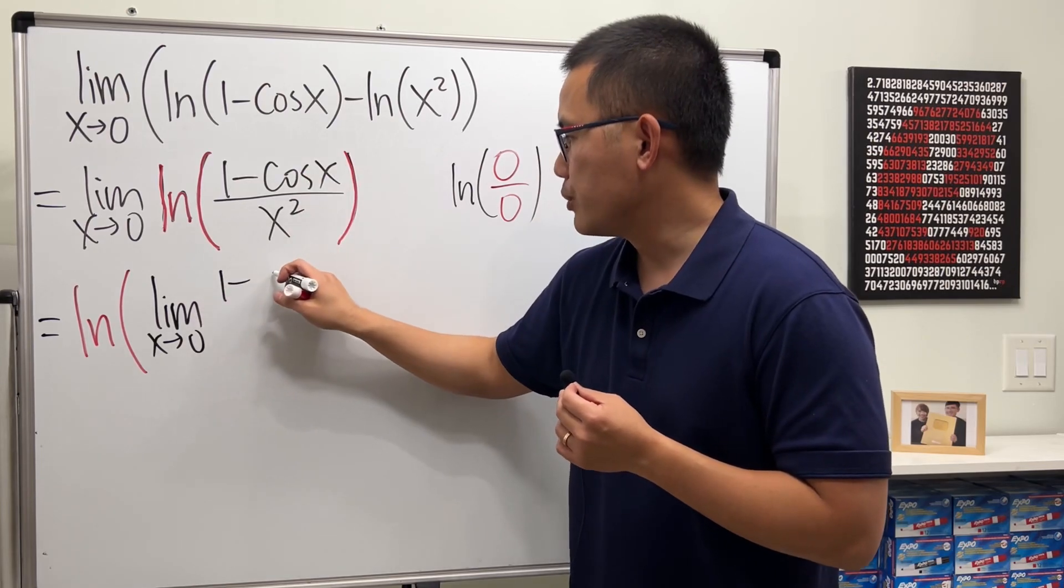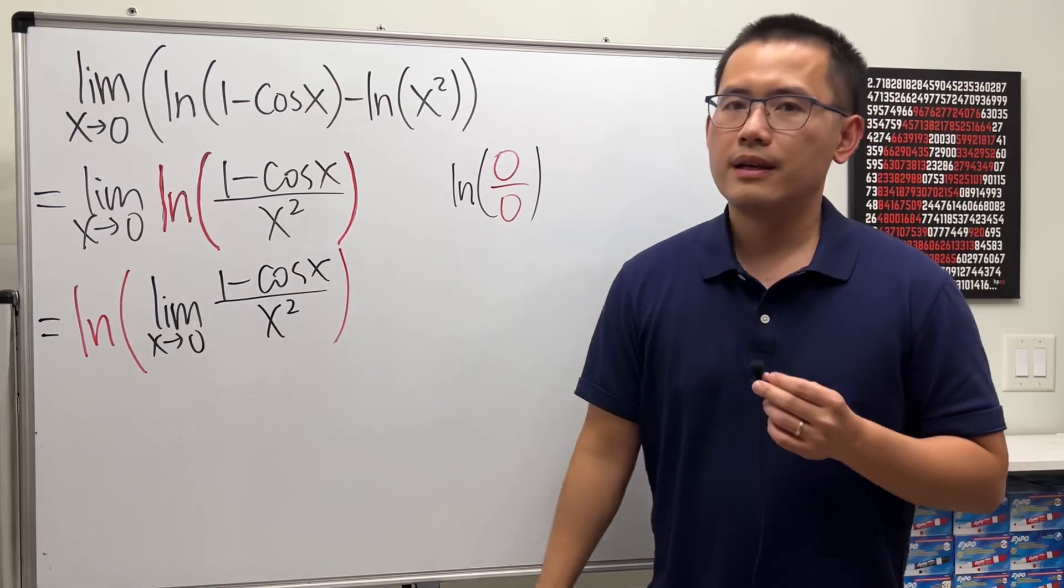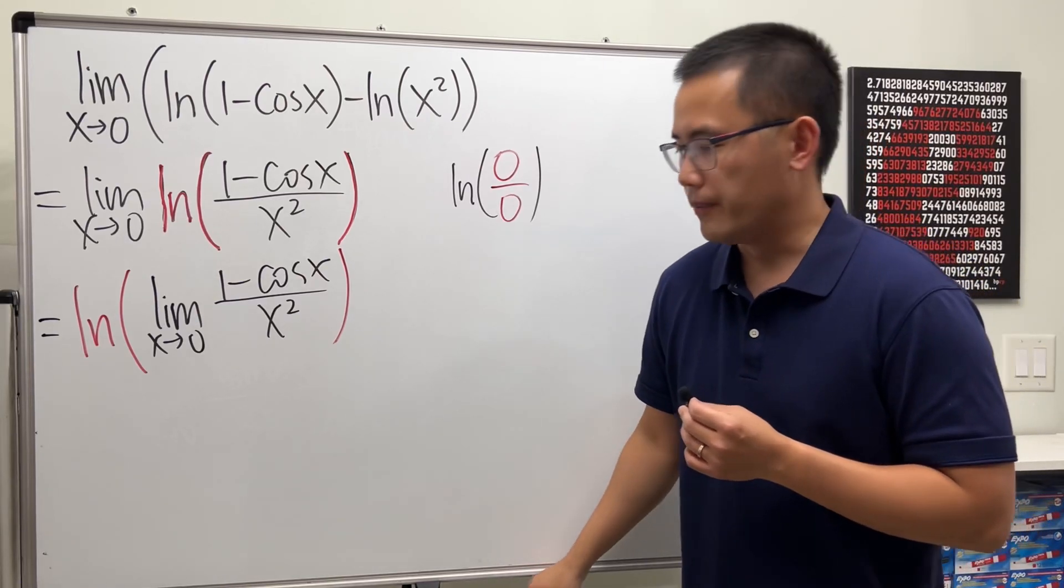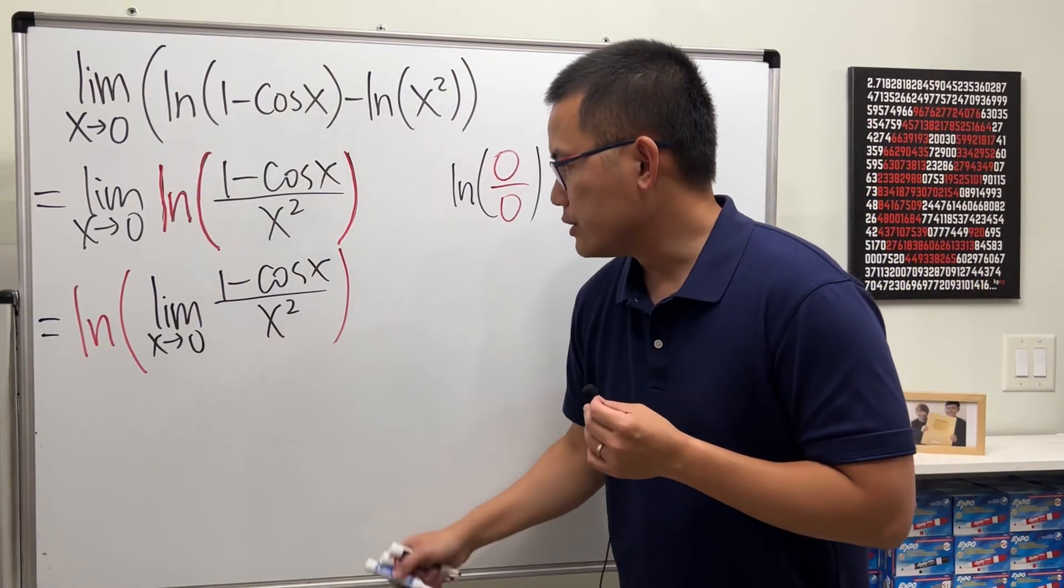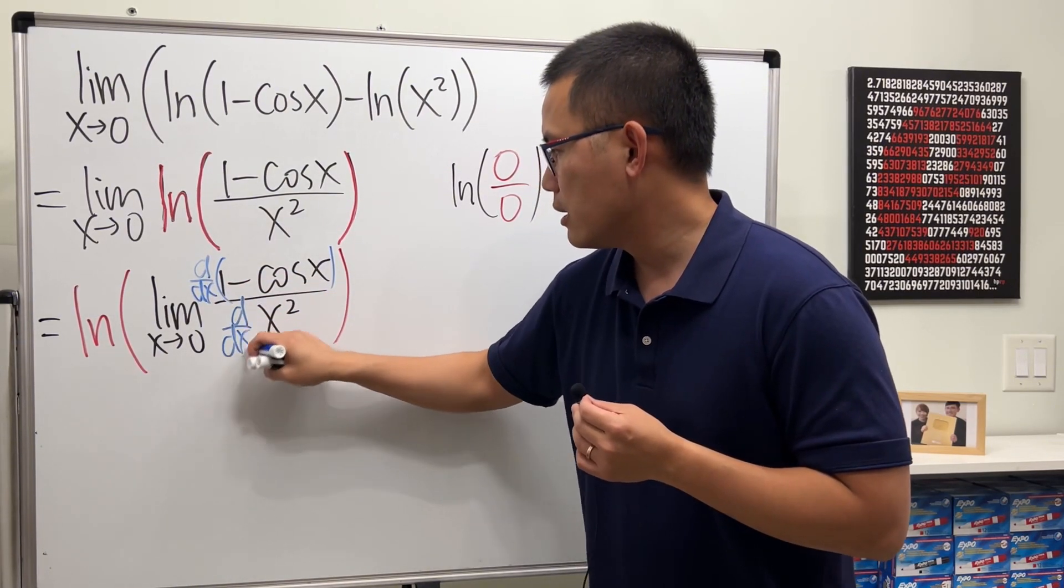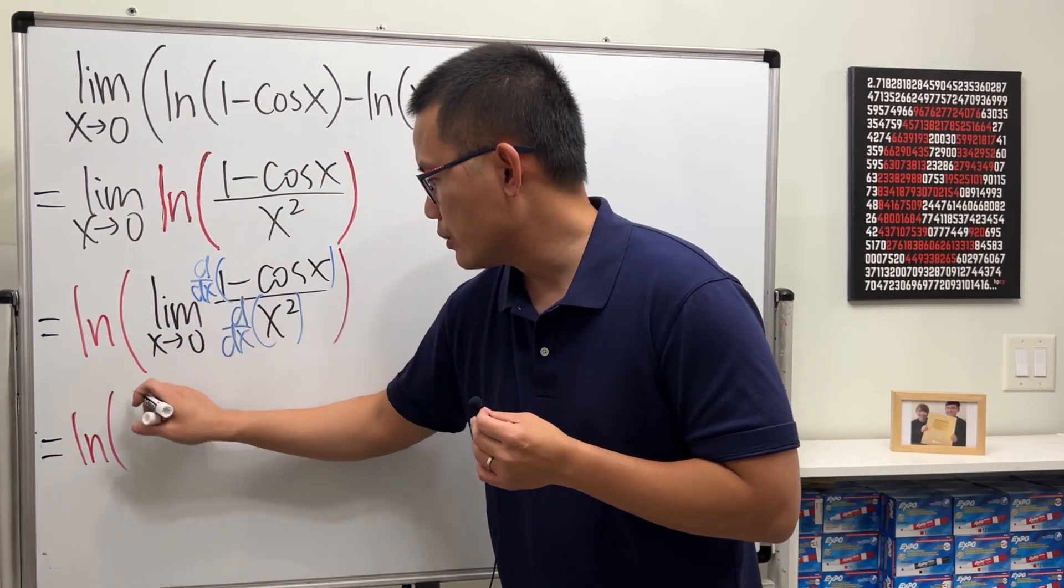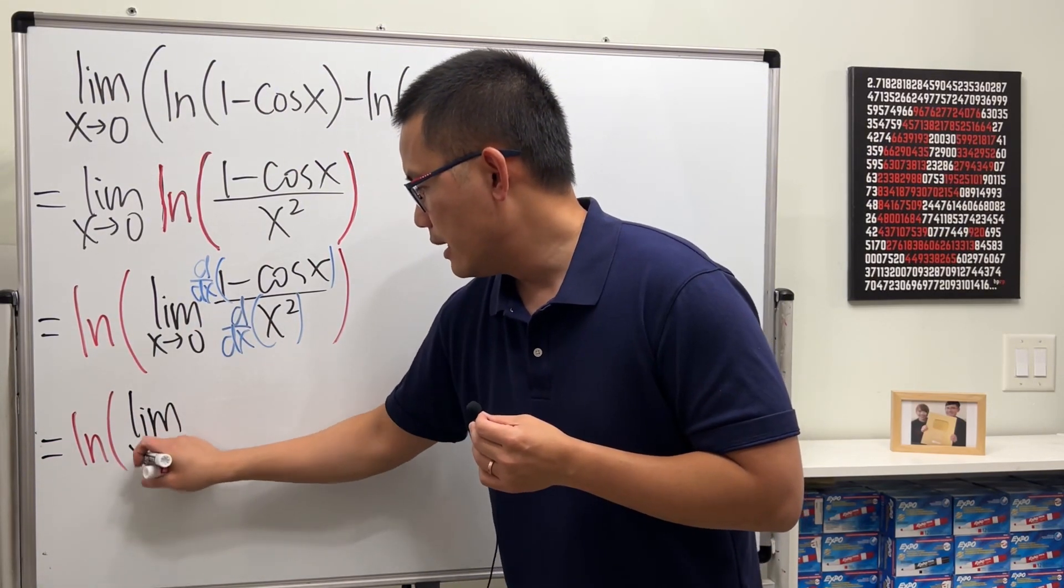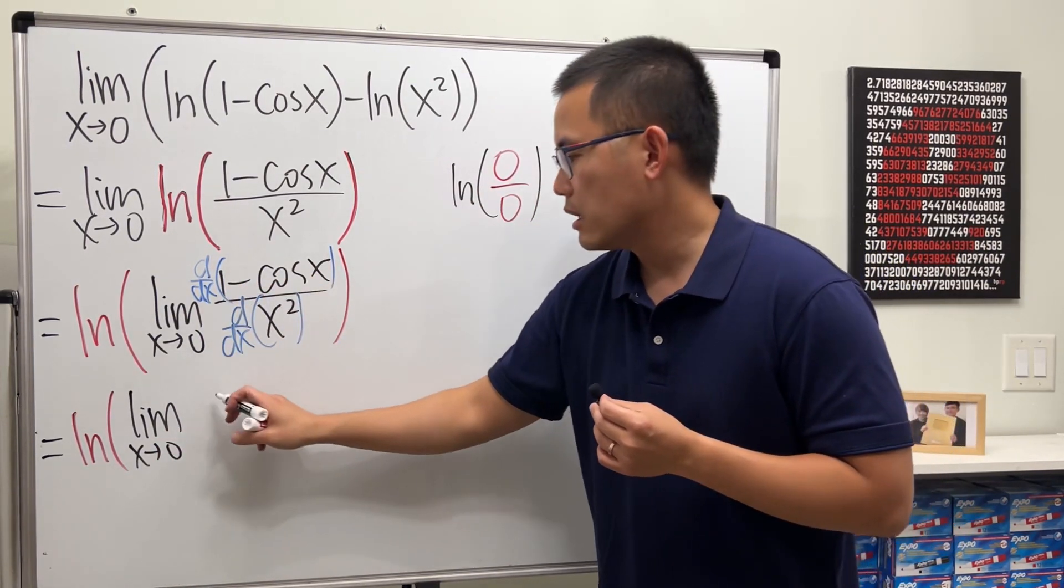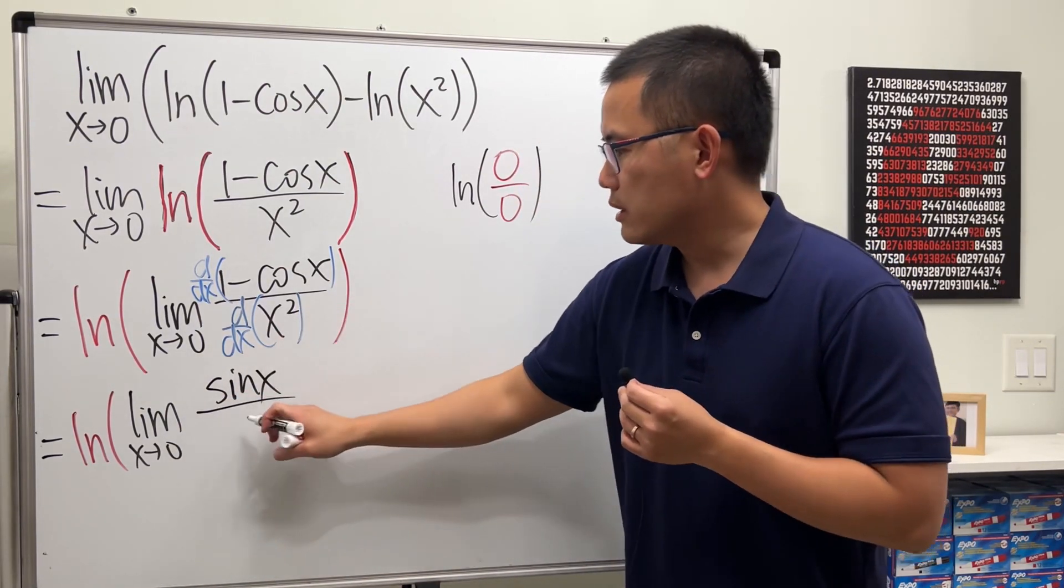Okay, now for the inside, of course we are just having the zero over zero, so we can use L'Hôpital's rule. To do so, we can just go ahead and take the derivative on the top and also take the derivative on the bottom. So on the outside we still have ln, and then we still look at the limit as x approaching zero. The derivative of one is zero, the derivative of negative cosine gives us positive sine x, over the derivative of x squared, which gives us 2x.